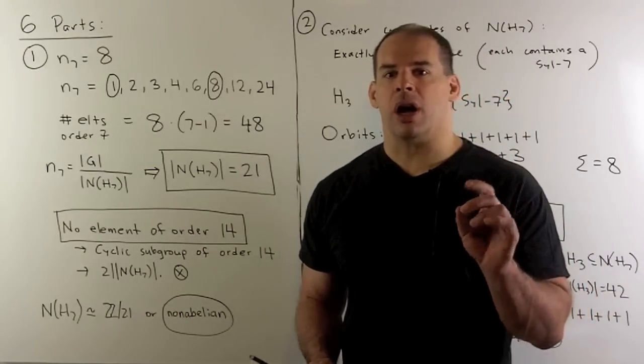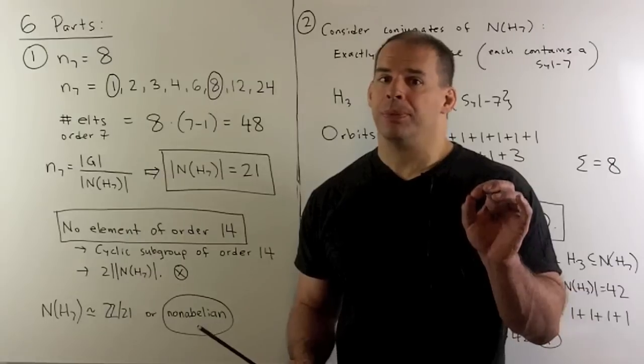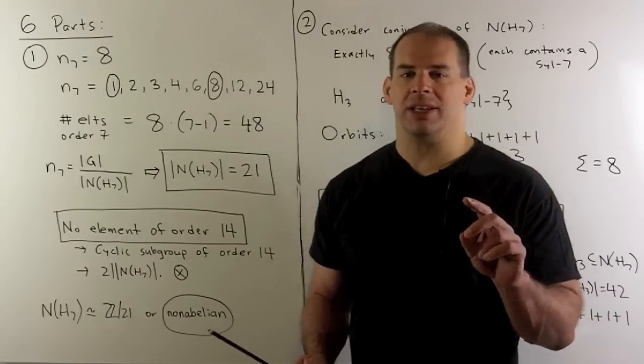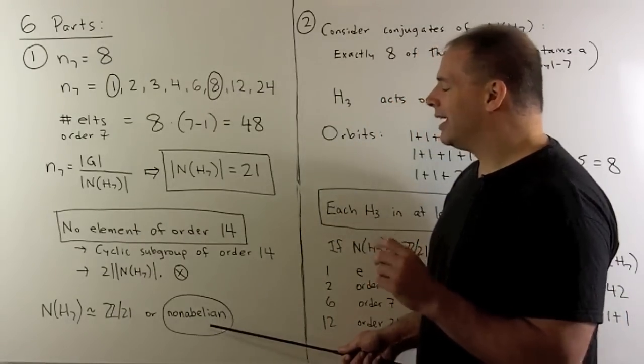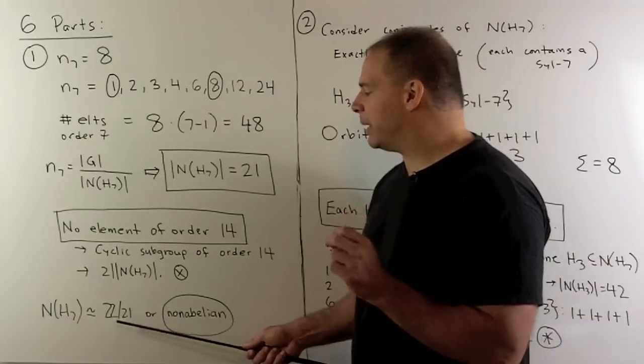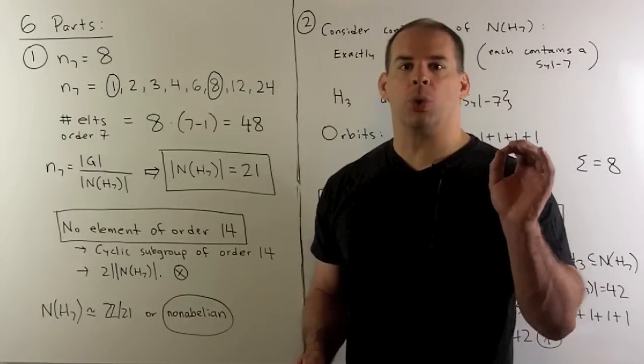Finally, structure of our normalizer. You have two options. Either it's non-abelian. If it's abelian, then it has to be a cyclic subgroup of order 21.